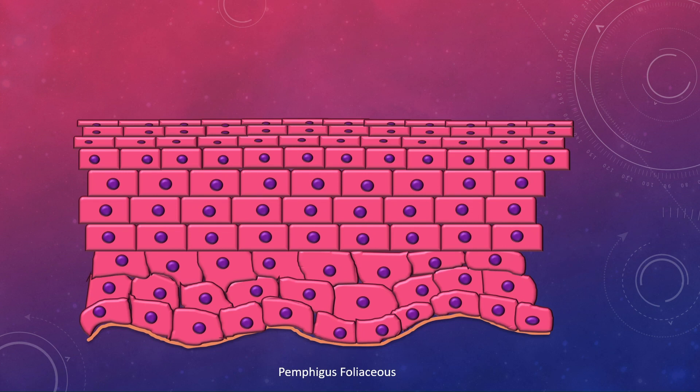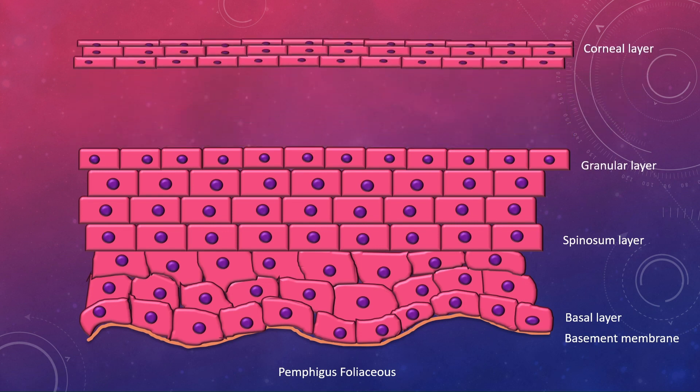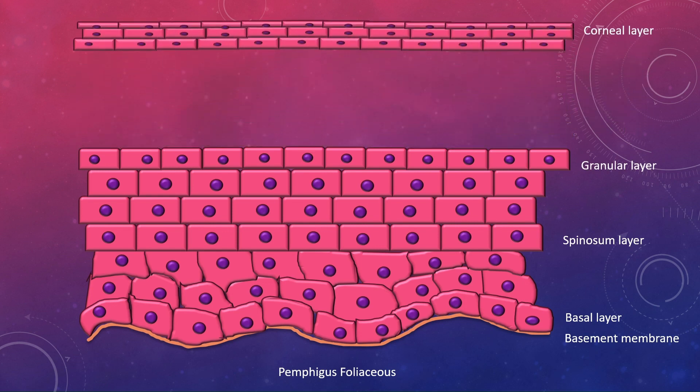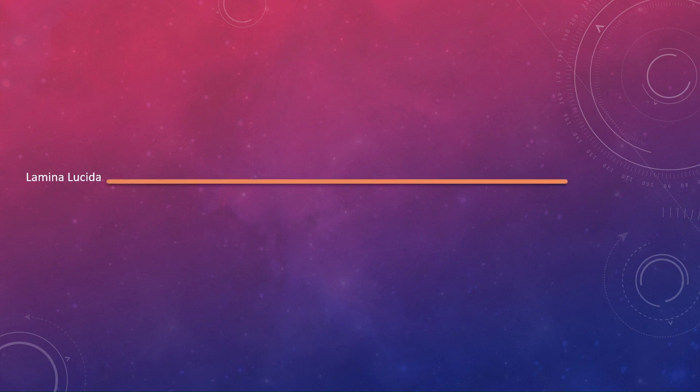In pemphigus foliaceus there is a sub-corneal blister, so there is a gap between the corneal layer and the remaining epithelial layers below it.